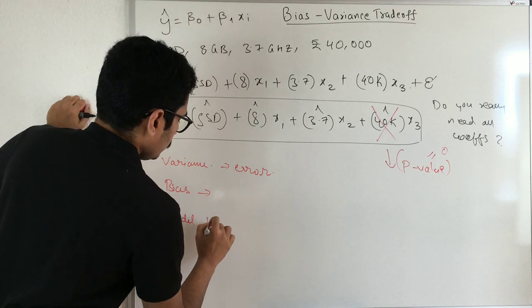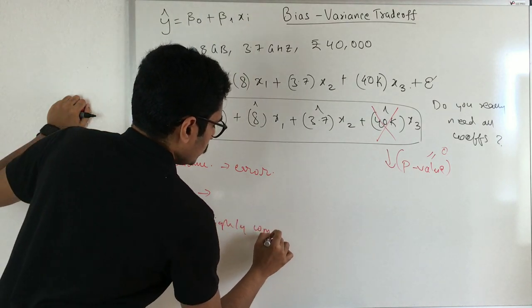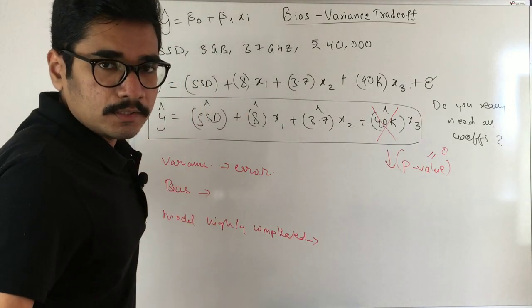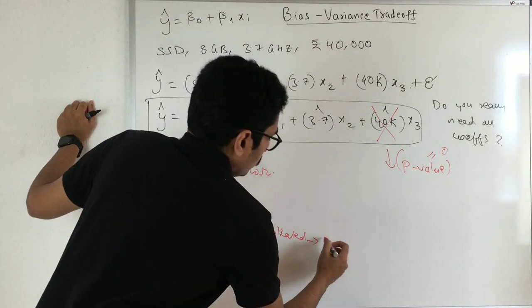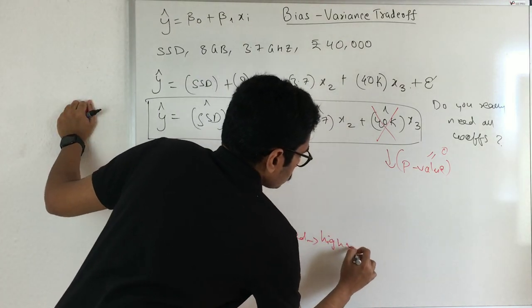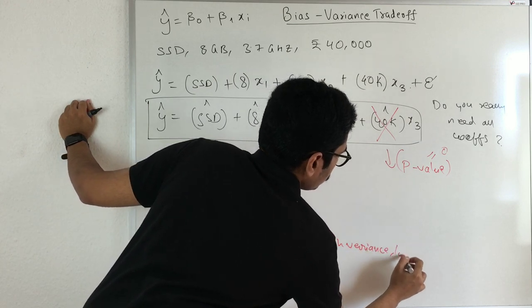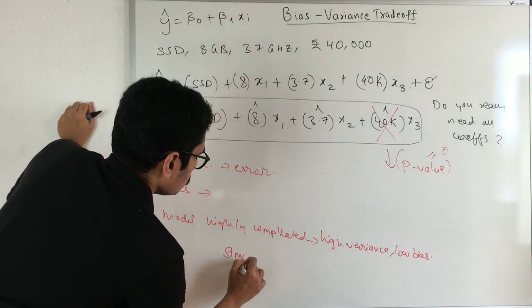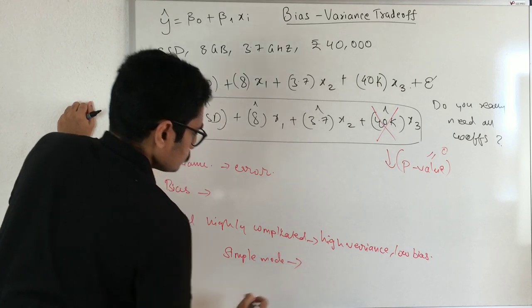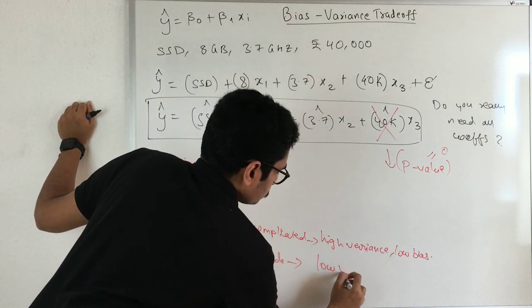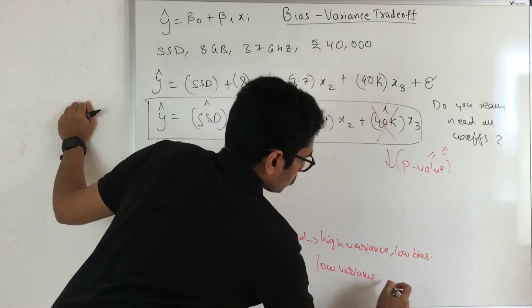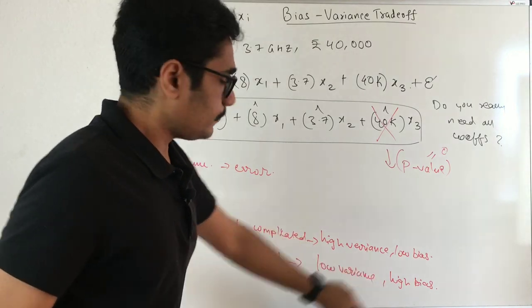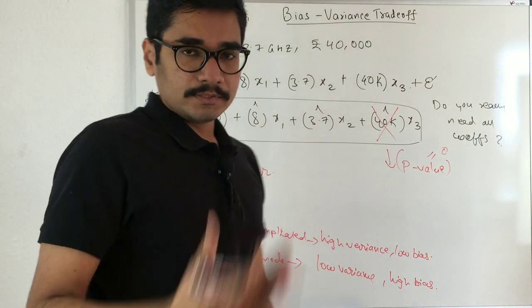For this, how will you basically model this? If you have a model which is very highly complicated, it will have high variance and low bias. On the contrary, if you build a simple model, you will have low variance and high bias. This is the fact actually.